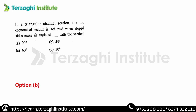In a triangular channel section, the most economical section is achieved when the sloping sides make an angle of 45 degrees with the vertical. The most economical section minimizes wetted perimeter and maximizes hydraulic mean radius. For a slope of 1:1, tan(θ) = opposite/adjacent = 1/1, so θ = 45 degrees.